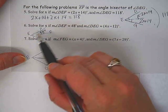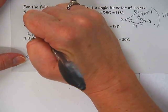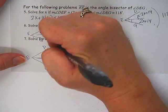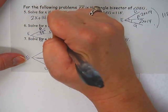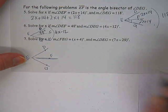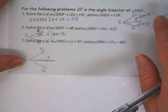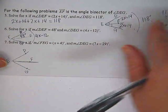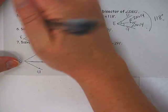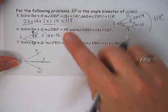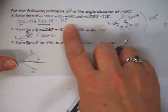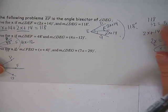Okay, number 6. Solve for X if angle DEF is 48 degrees. And angle DEG, pay attention again to where the letters are. DEG, which angle is that one? It's the whole big angle, is 4X minus 12. Okay, again, what are some ways I can set up this problem?